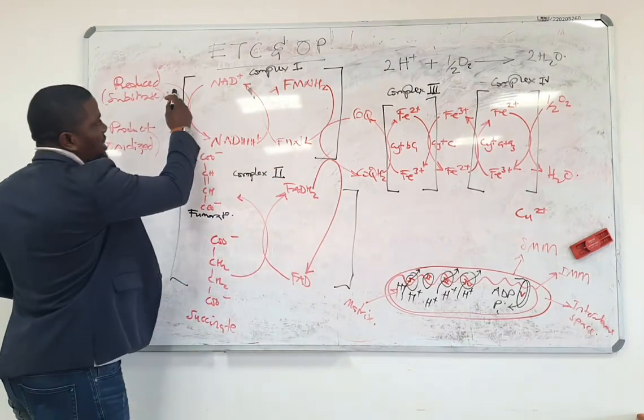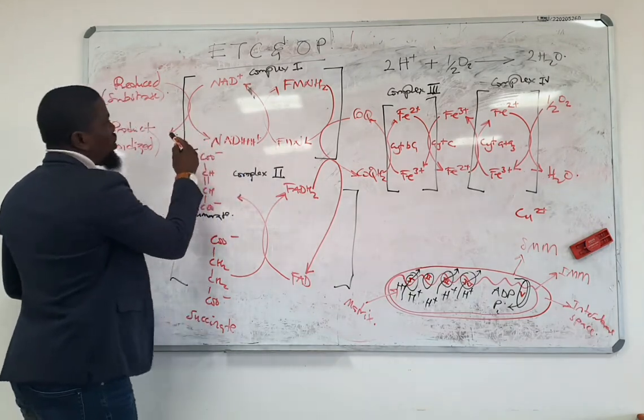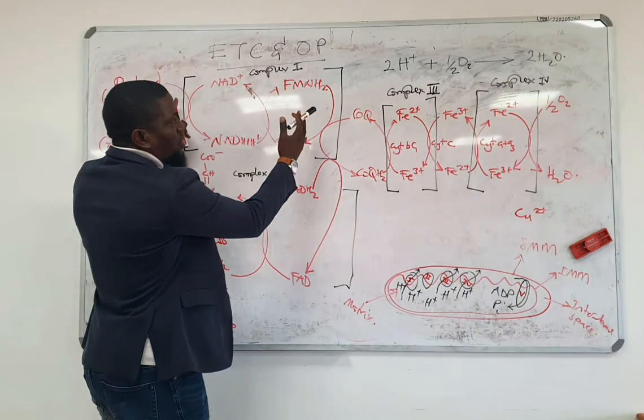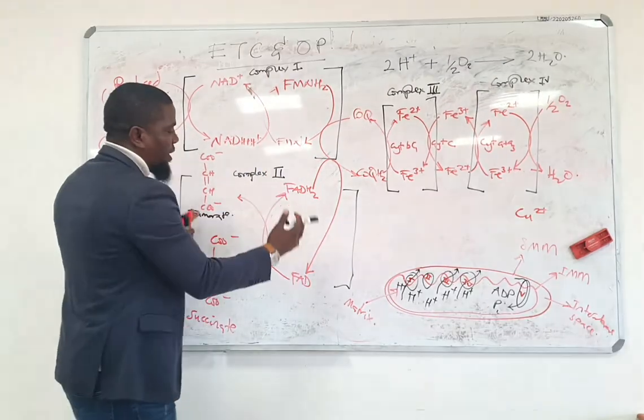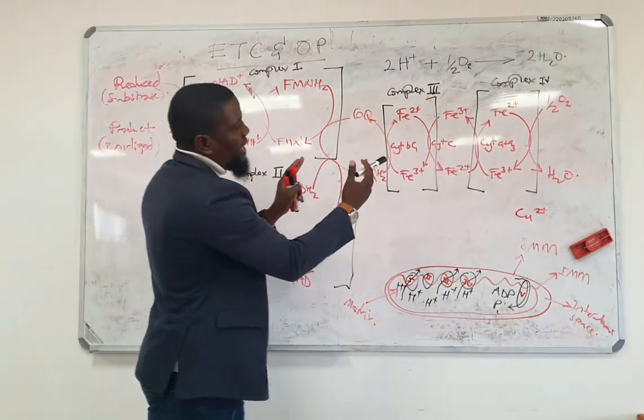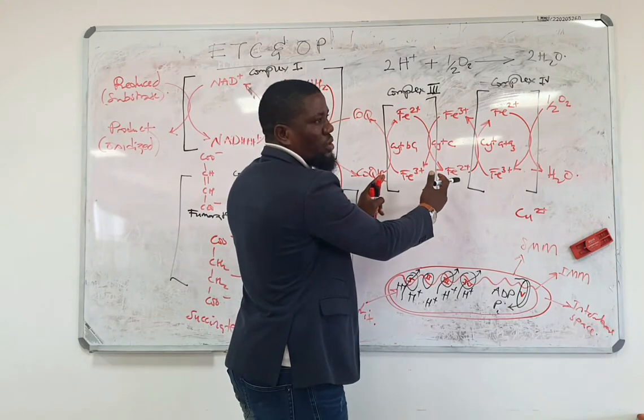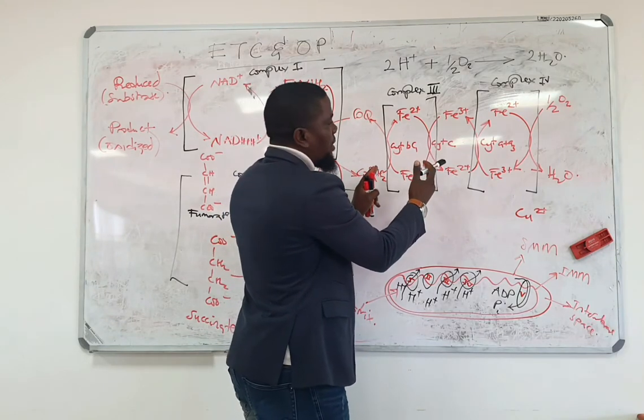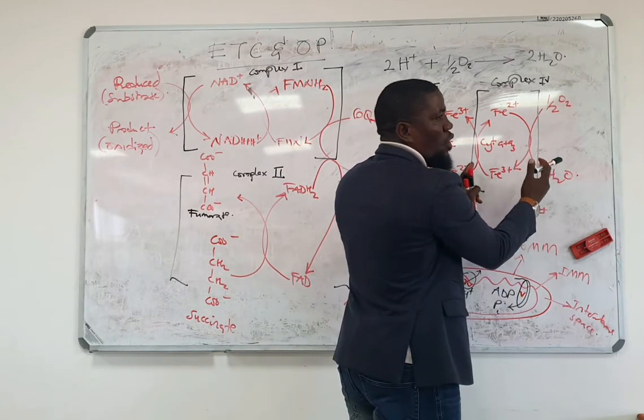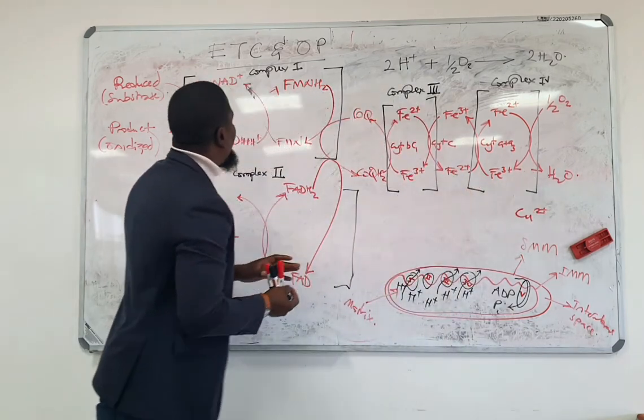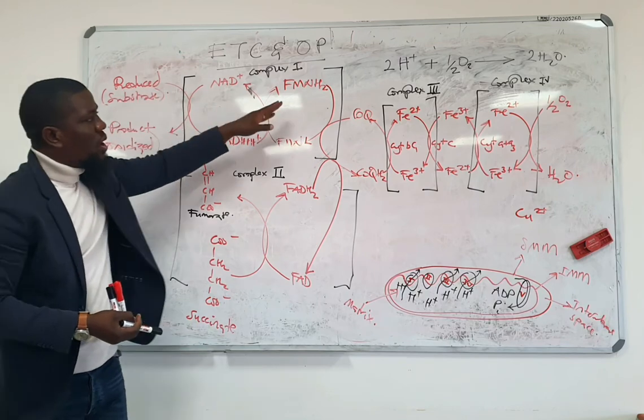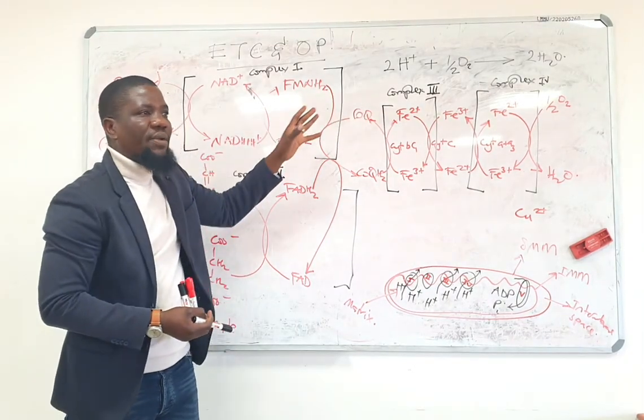So, as it is happening in this complex, which is also referred to as the NAD-linked dehydrogenase. This complex one is also called NAD-linked dehydrogenase, right? Complex two is also called succinate dehydrogenase. Complex three is called cytochrome C reductase. Complex four is called cytochrome oxidase. That's the other name. You discover that as the electrons or the hydrogens are moving through complex one onto coenzyme Q, energy is generated.